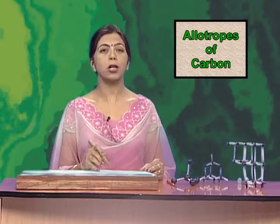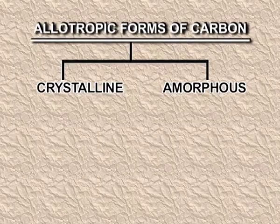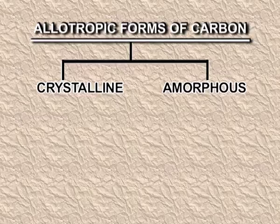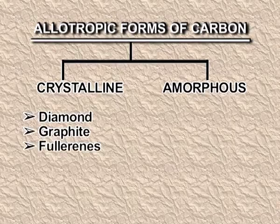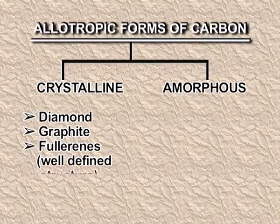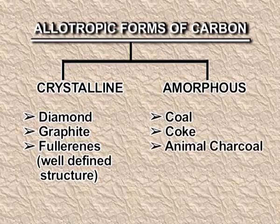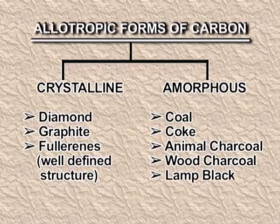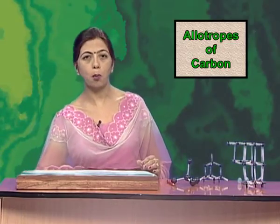Carbon shows two allotropic forms: crystalline and amorphous. The crystalline forms are diamond, graphite, and the recently discovered fullerenes. They all have a well-defined structure. The amorphous forms are coal, coke, animal charcoal, wood charcoal, and lampblack. Let's discuss each one of them one by one.